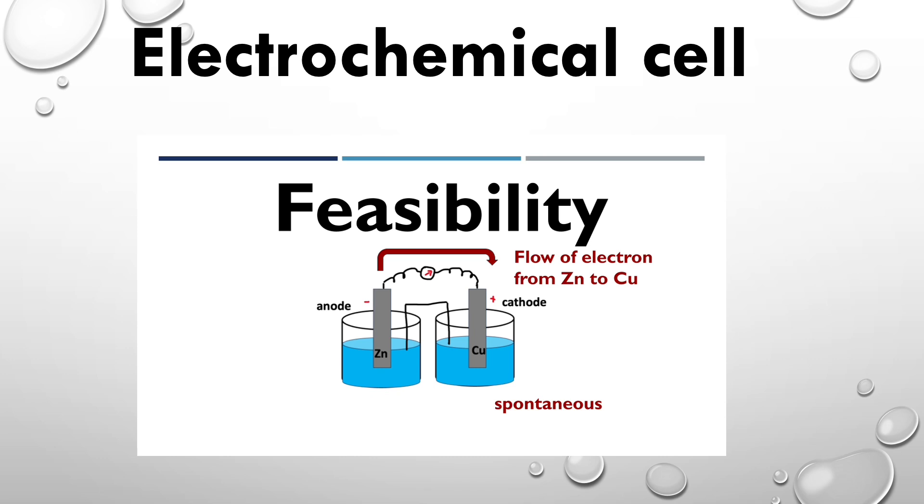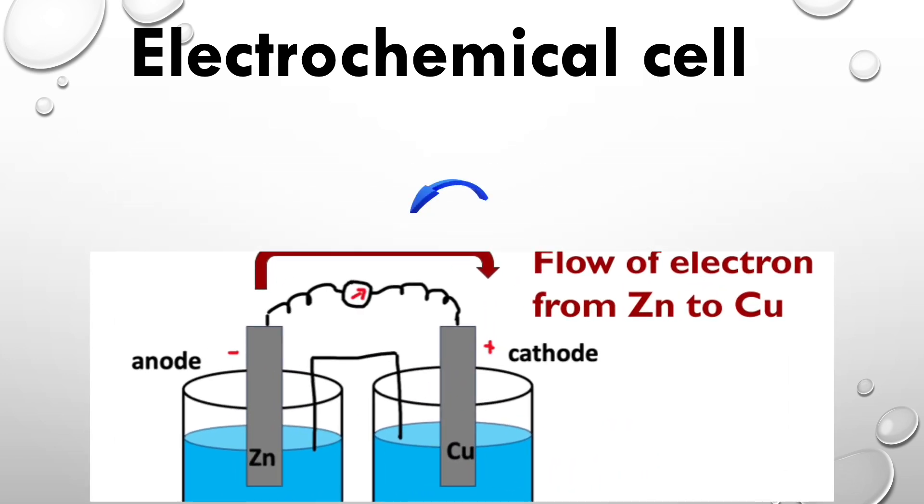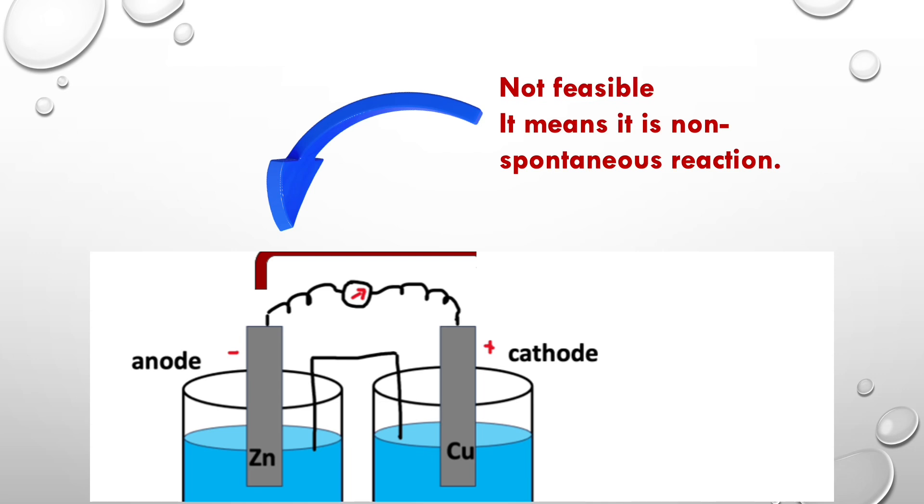But the reverse reaction, that means copper to zinc, is not considered as spontaneous. So the reaction is not feasible. Hence, this reaction is continuous non-spontaneous reaction.